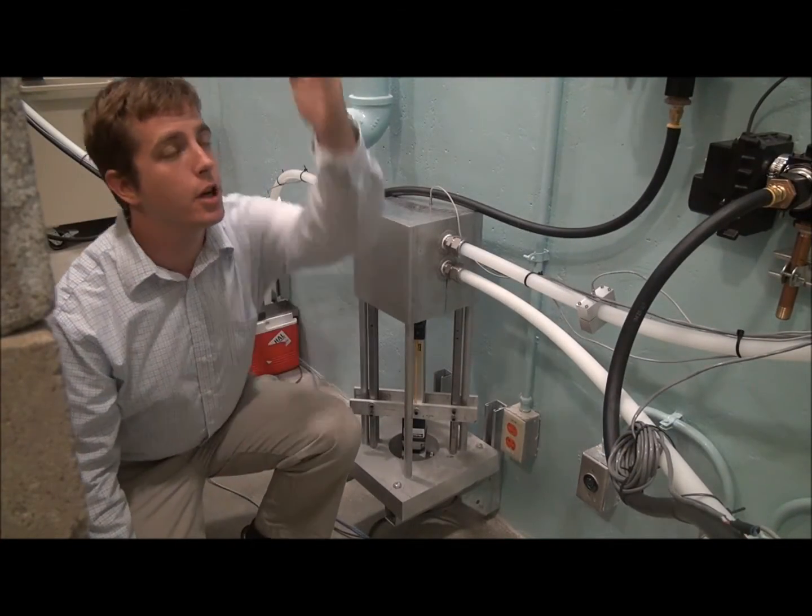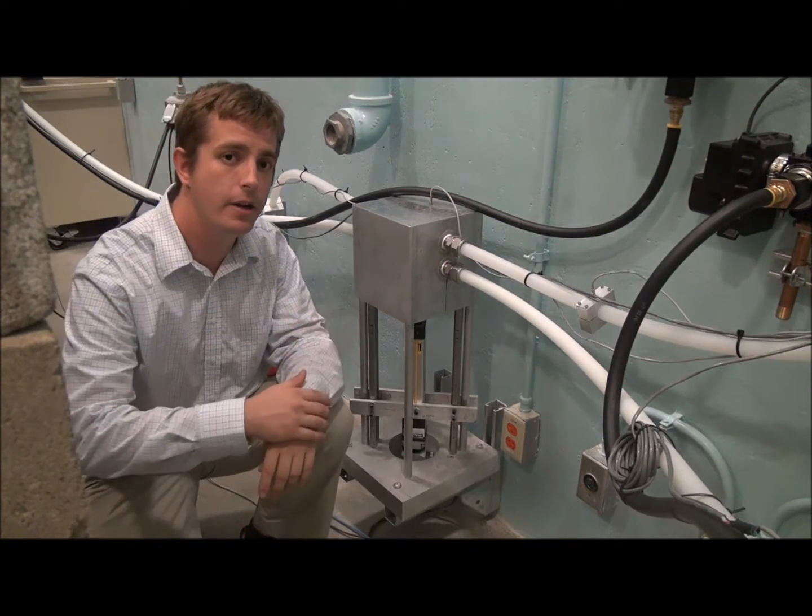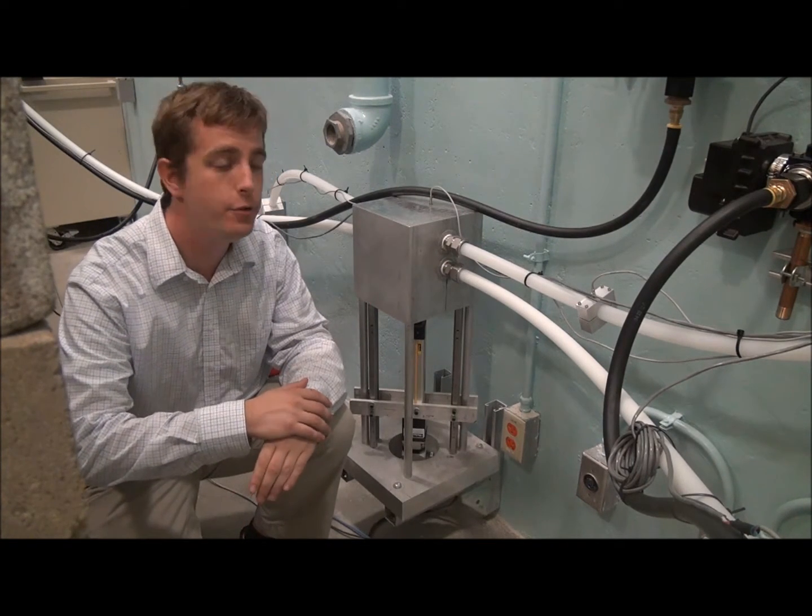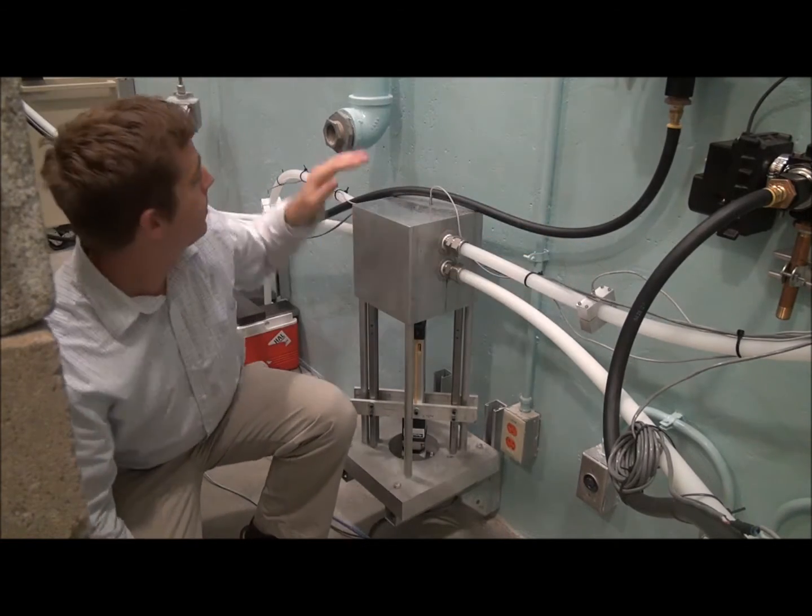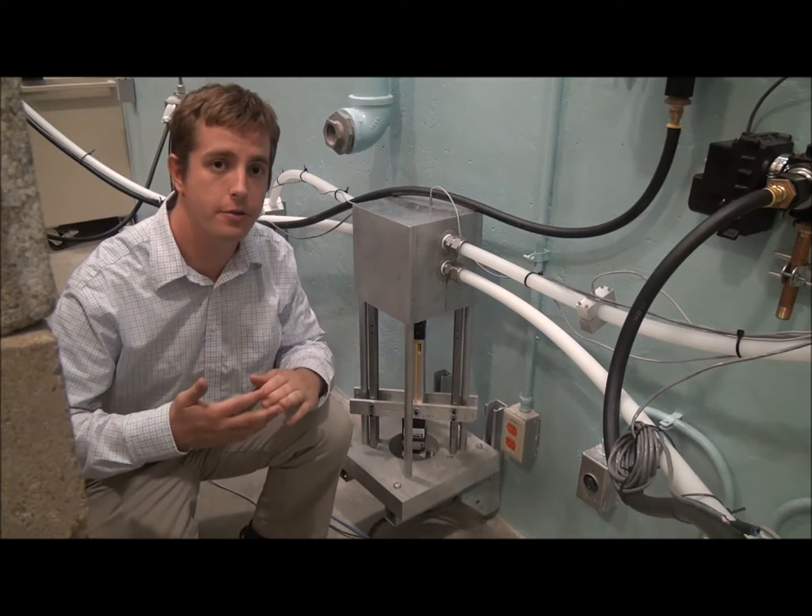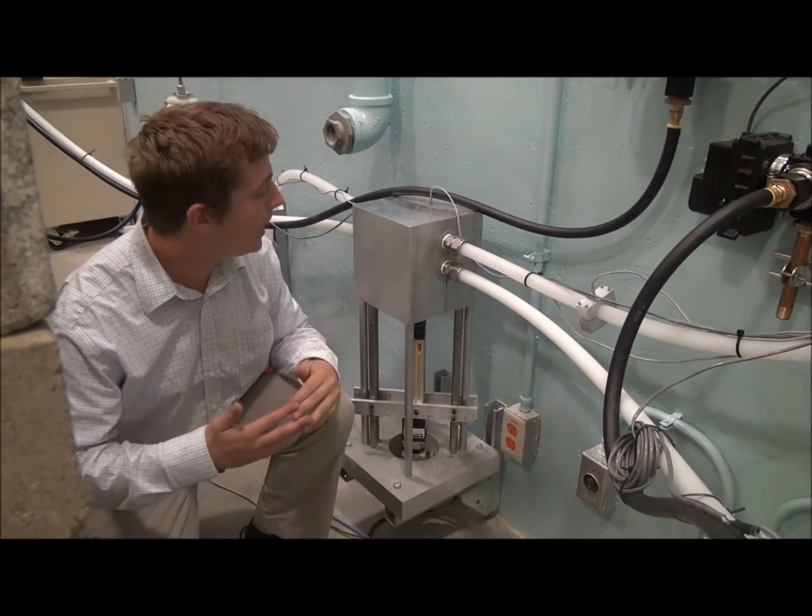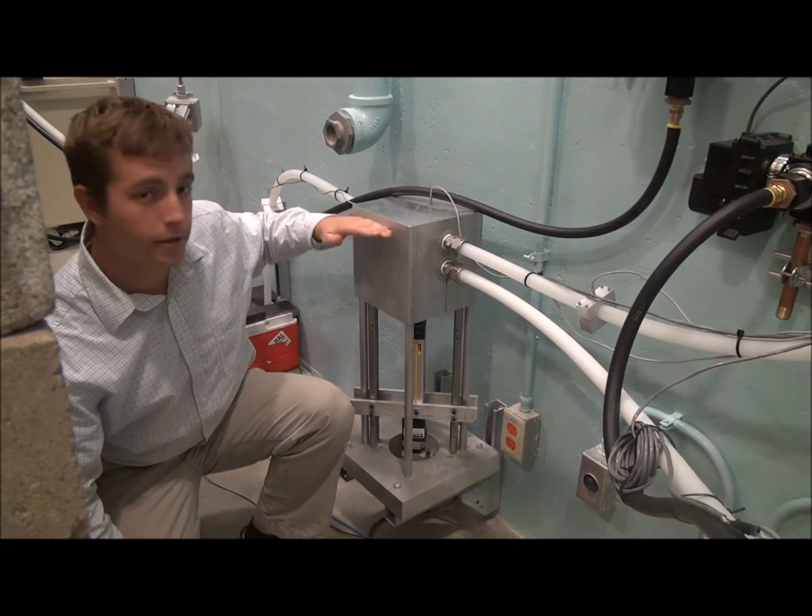Once the sample comes over the wall, it enters what we call the elevator right here. Basically, we have two pneumatic tracks. One track goes from the loading mechanism to the waste. The other track goes from the neutron generator to the germanium detector. The elevator basically takes the sample and switches it from track to track.